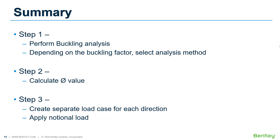This is the overall process for considering stability analysis according to Eurocode. To summarize: first, perform buckling analysis to determine which analysis method is required — first-order elastic or second-order. Next, calculate the initial sway imperfection value, the phi value. The final step is to create separate load cases for each direction and apply notional load using this phi value.